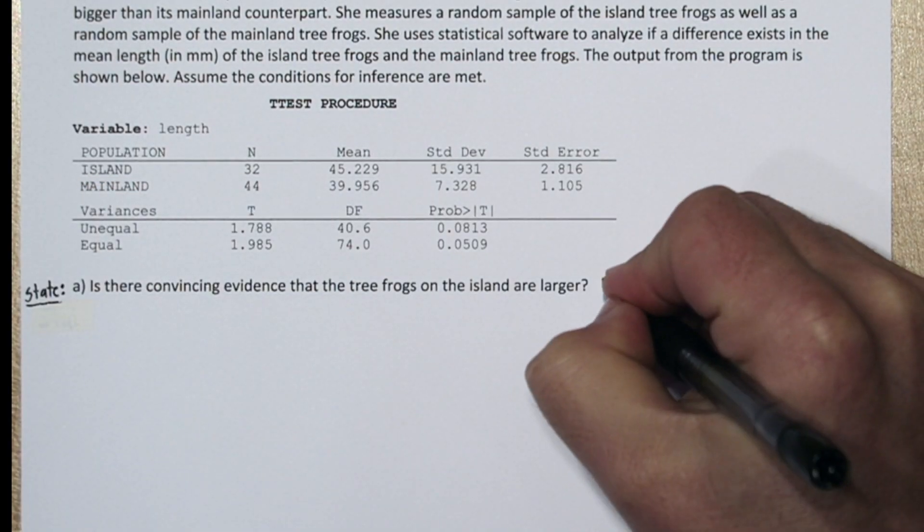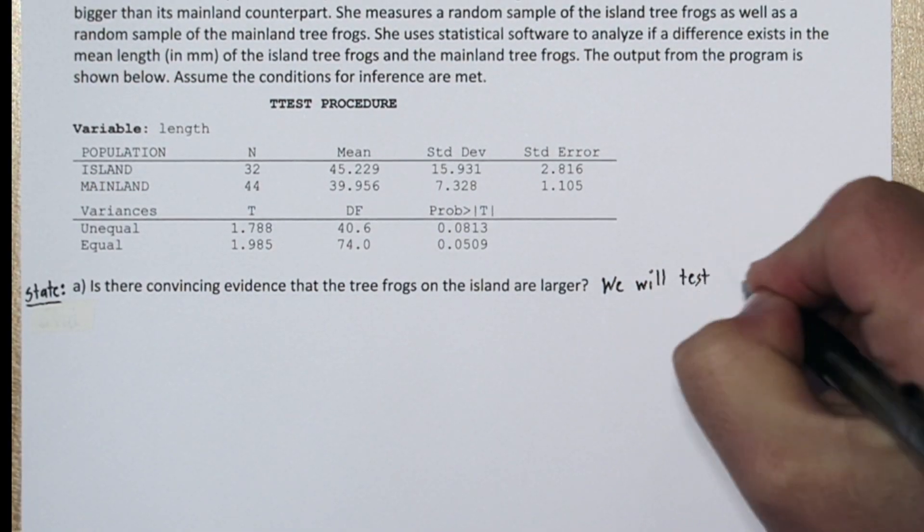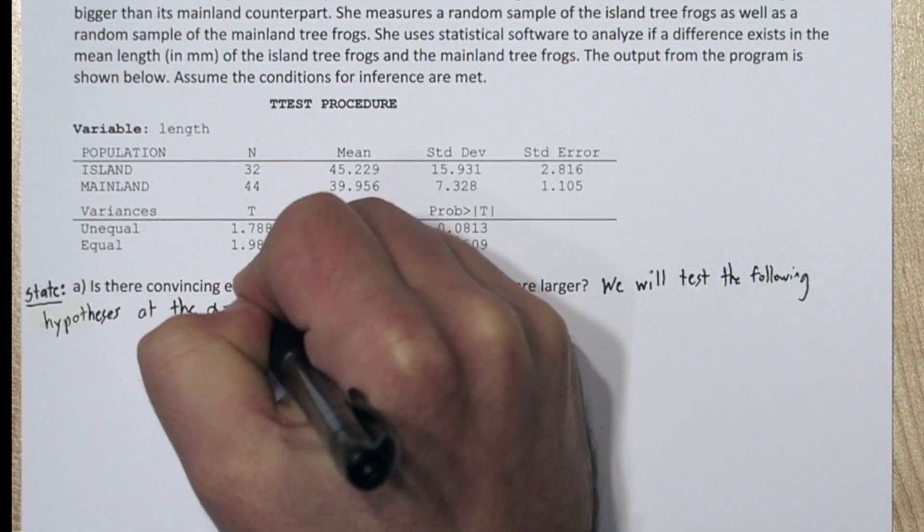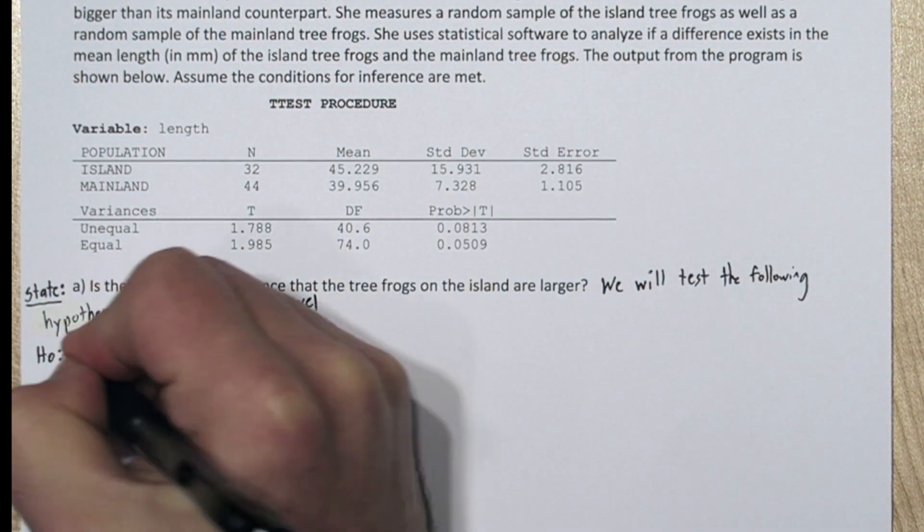We're going to use the four-step solving process. Let's start with the state step. So we're trying to find if there's convincing evidence that the tree frogs on the island are larger.